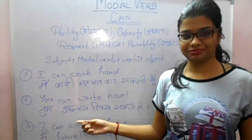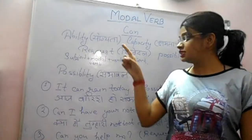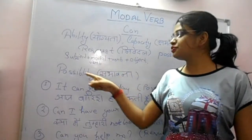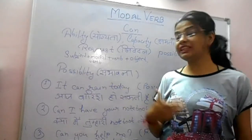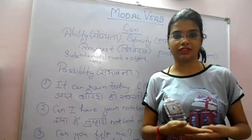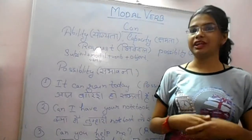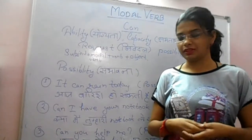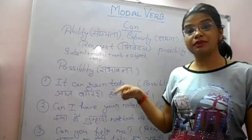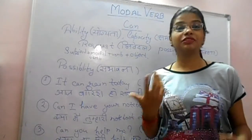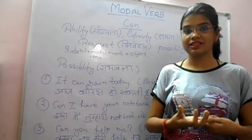Now 'can' is also used for telling possibility (sambhavna). For example: 'It can rain today' — aaj barish ho sakti hai. It is also used for permission: 'Can I have your notebook please?' or 'Can I have your pen please?'